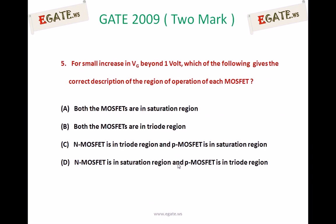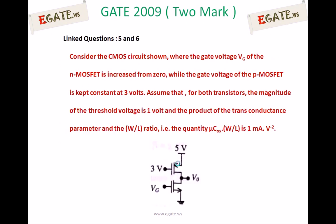Now, for a small increase in VG beyond 1V, which of the following gives the correct description of the region of operation of each MOSFET? That is, if the gate voltage is slightly greater than the threshold voltage, what is the region of operation for the PMOS transistor and for the NMOS transistor?